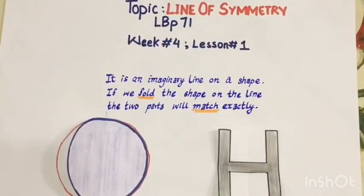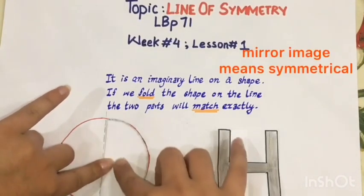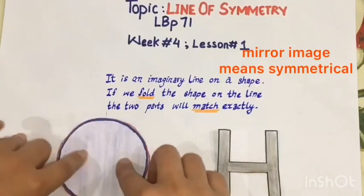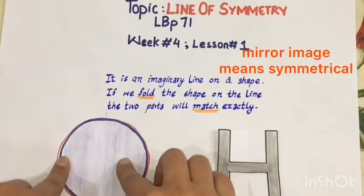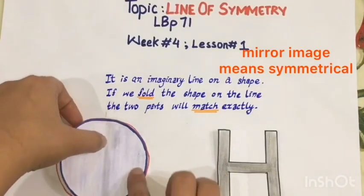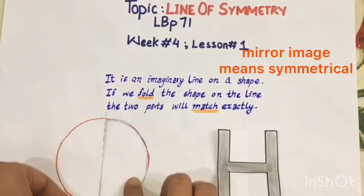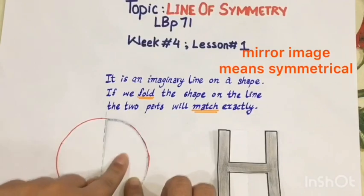Bismillahirrahmanirrahim. Assalamu alaikum. Today our topic is about line of symmetry. It is an imaginary line on a shape. If you fold the shape on the line, the two parts will match exactly. Here in this example, the right side of the circle is matching exactly with the left one, and this is the mirror image of that other part. You can clearly see this line here, so these two parts are the mirror image of each other.